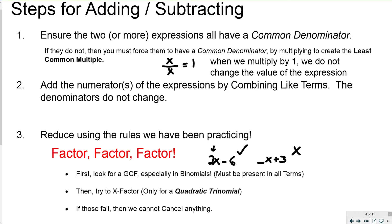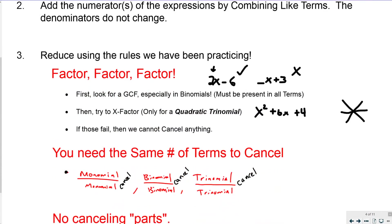If you have any quadratic trinomials — like x squared plus 6x plus 4 — you'll want to try to factor that using the X-factor method. If those fail, we won't be able to cancel anything, but try to reduce any coefficients if possible. Make sure you have the same number of terms to cancel: a monomial like 6x, a binomial like x plus 2, or a trinomial like x squared plus 6x plus 4.